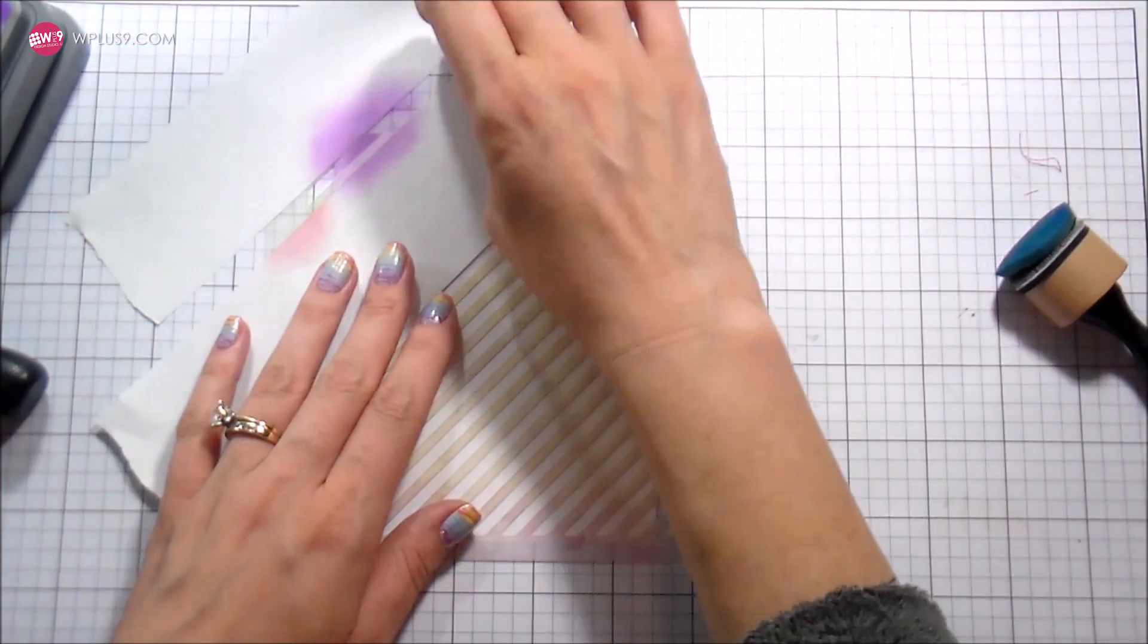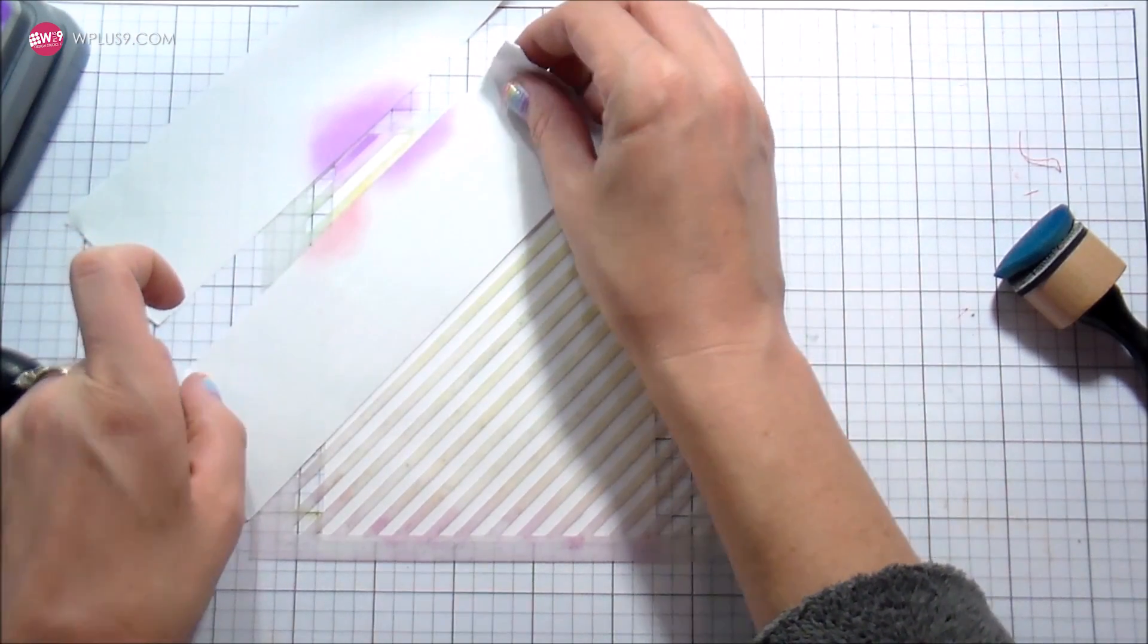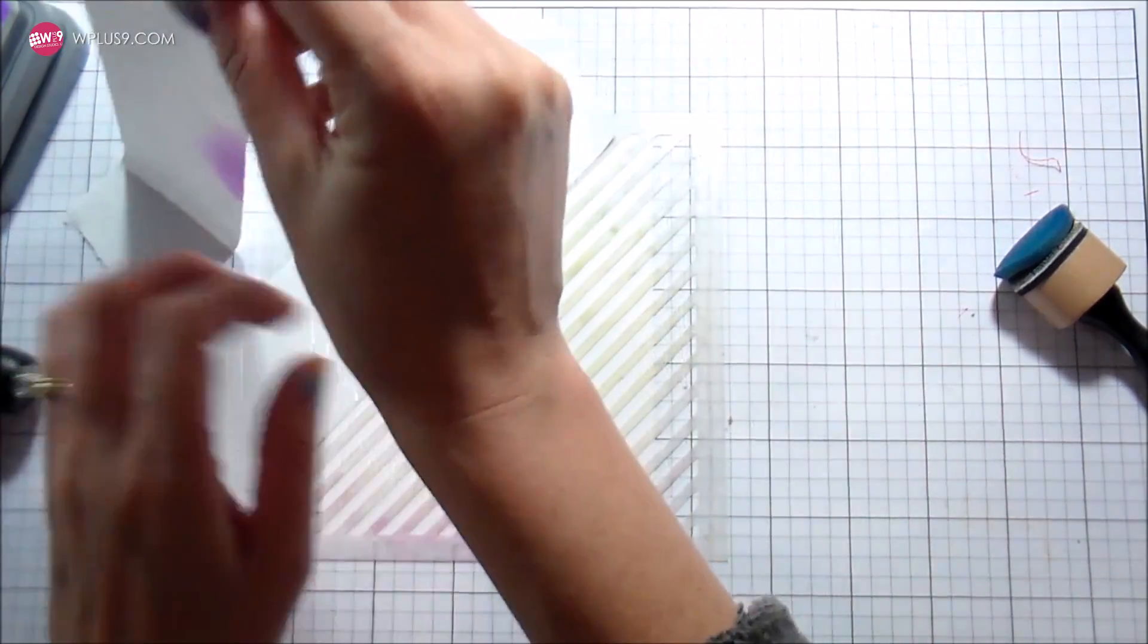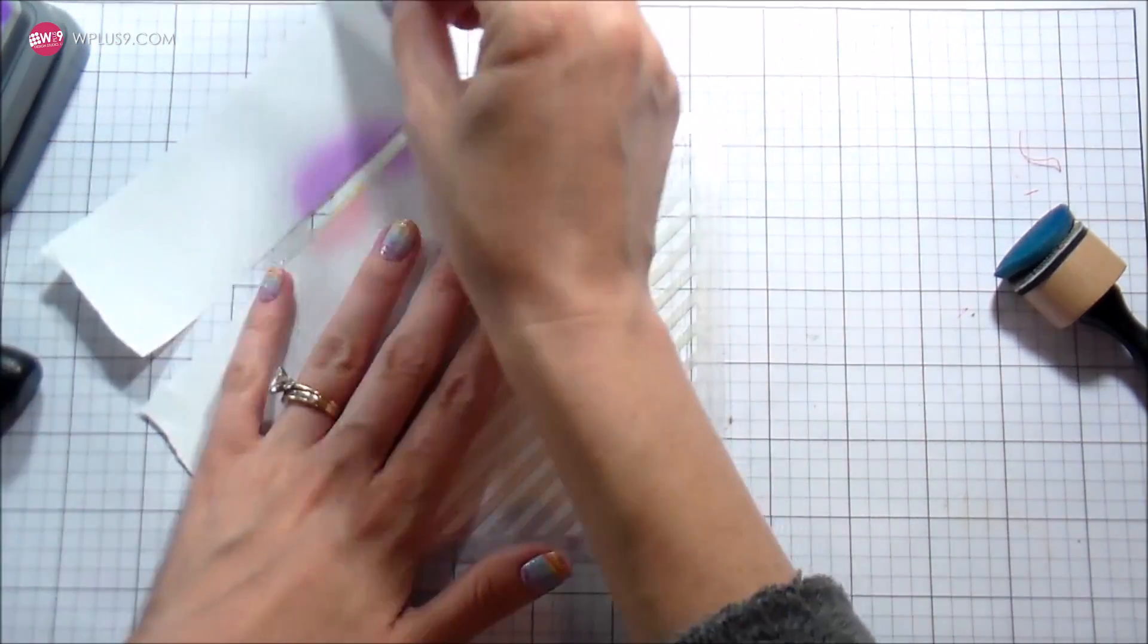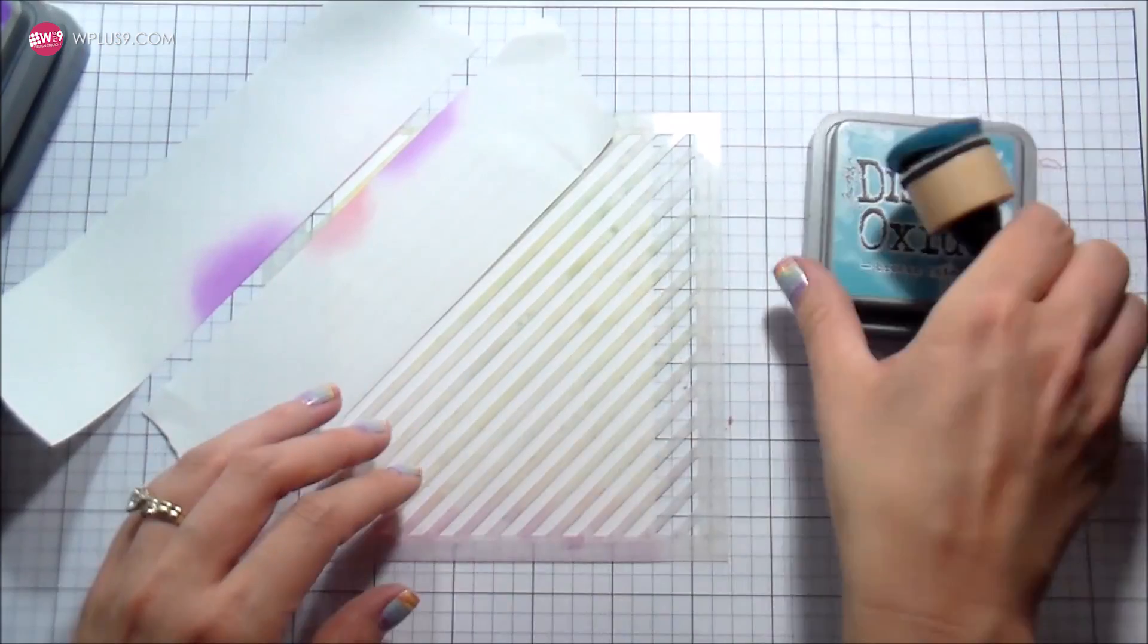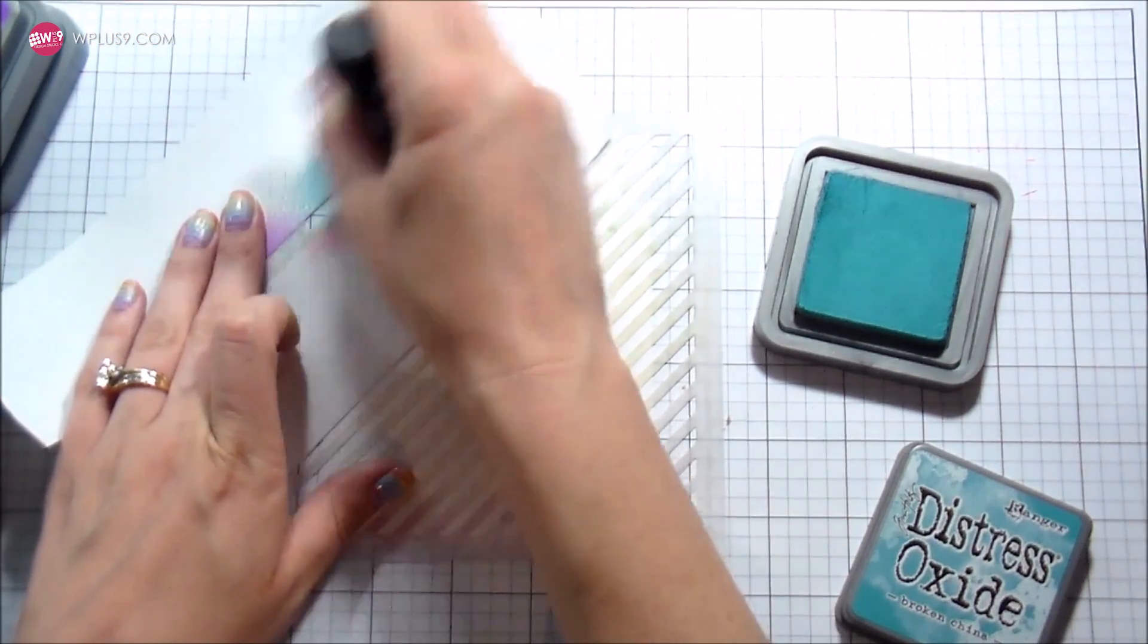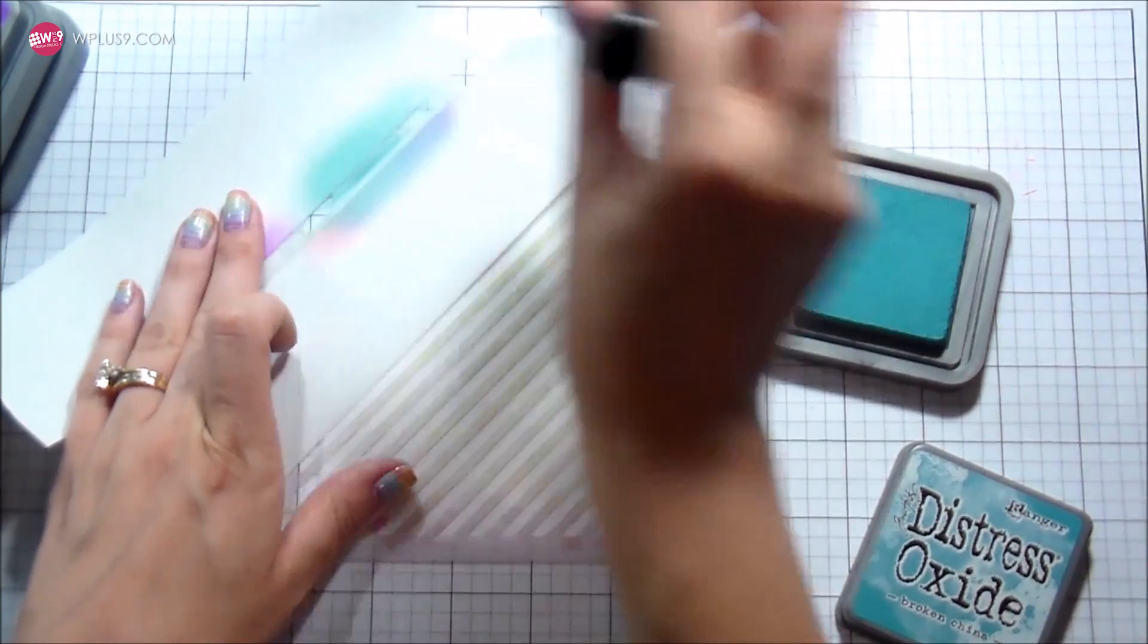In reality what I did was I stuck with one color and counted the spaces in between. I started with the pink, there were five spaces for the violet, broken china, cracked pistachio, fossilized amber, and spiced marmalade. Then I counted five spaces and did another pink one.